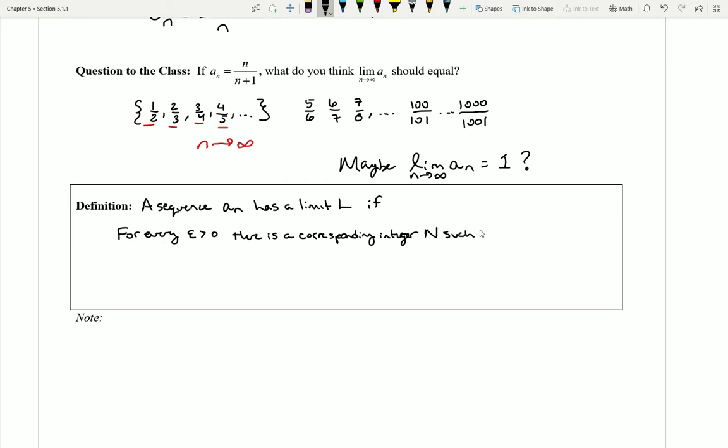If it's the case that we go to a spot in the list that's past this capital N, then it will be the case that the absolute value of a sub n minus the L will be less than epsilon.